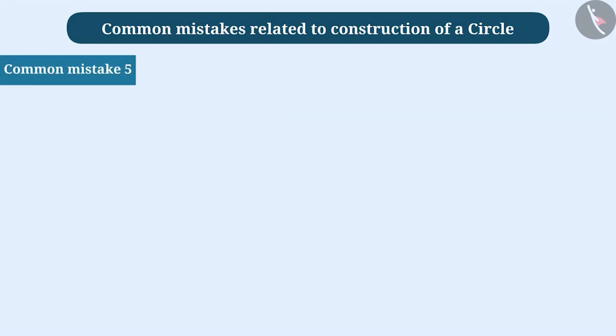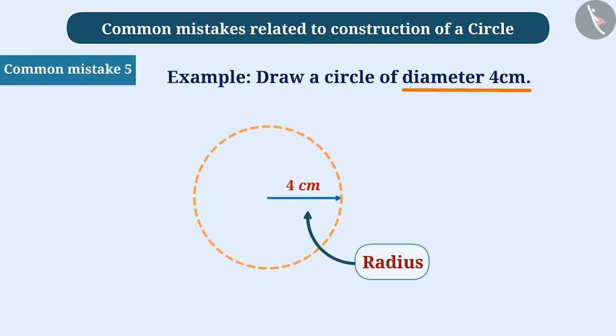Common mistake 5. Many times, in the question, the length of the diameter is provided to construct a circle. But students misinterpret the information provided. They construct the circle, assuming the given measurement to be the length of the radius and as a result obtain the wrong circle.